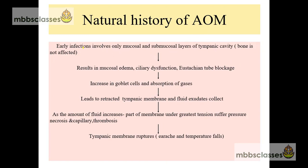First of all, it begins with viral infections. The early infection involves only the mucosal and submucosal layers of the tympanic cavity, which means the bone is not involved. It results in edema of the mucosa lining the tympanic cavity and middle ear cleft. The cilia get disrupted in function and there is eustachian tube blockage. As a result, there is an increase in the number of goblet cells and the intratympanic gases get absorbed. Due to the absorption of intratympanic gases, negative pressure develops, which leads to a retracted tympanic membrane.